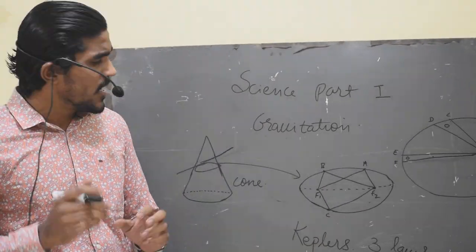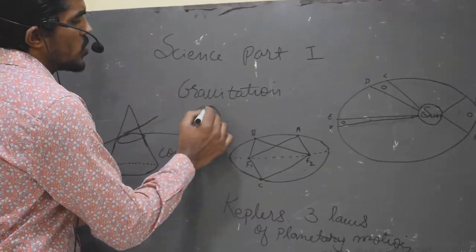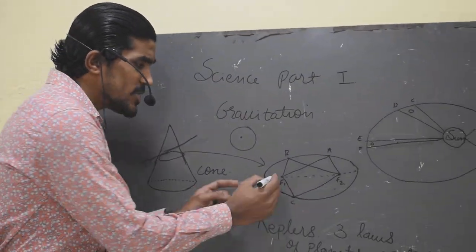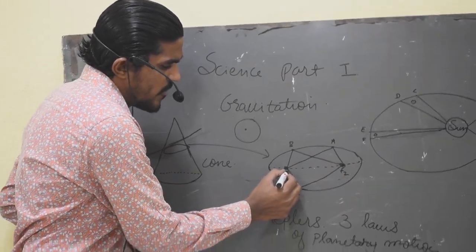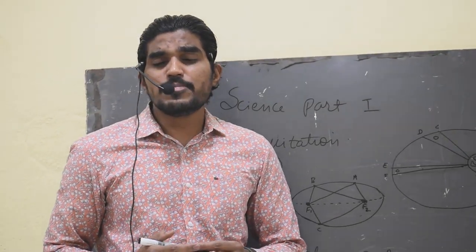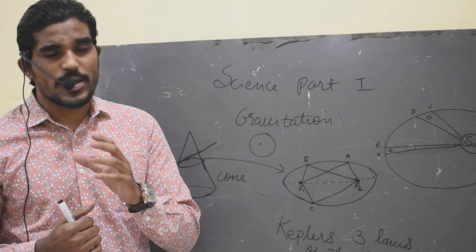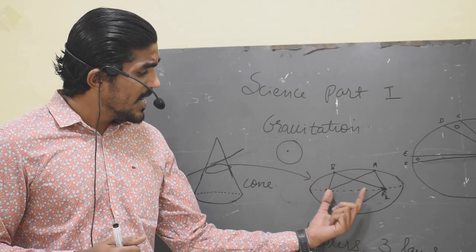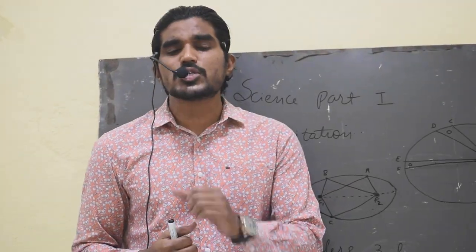Now the importance of ellipse is that ellipse has two focal points. If you see a circle, a circle has just one focal point — that is the center. But if you see an ellipse, ellipse has two focal points: F1 and F2. For example, the shape of an egg is like an ellipse. Watermelon is also like an ellipse. So ellipse has two focal points.